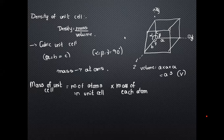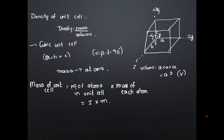The total mass of the unit cell equals Z into M, where Z is the number of atoms per unit cell and M is the mass of each atom.